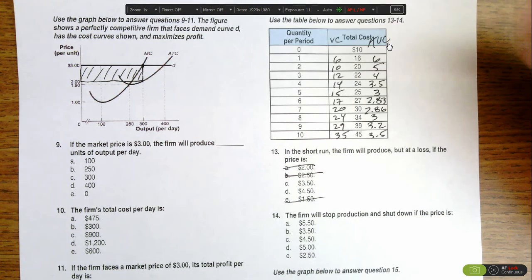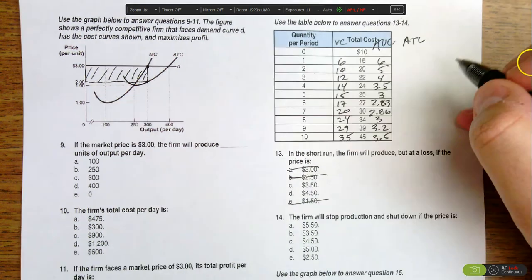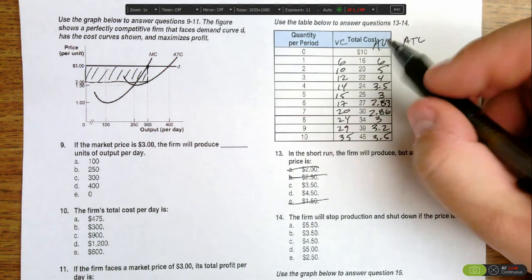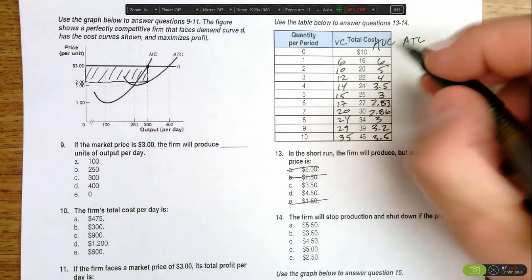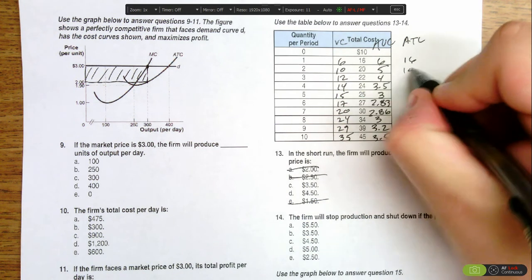We also need to know what the average total cost is for each of these. To do average total cost, we just take total cost divided by quantity. So for one, we'd see average total cost is $16. For two, it's $20 divided by two, which is $10.